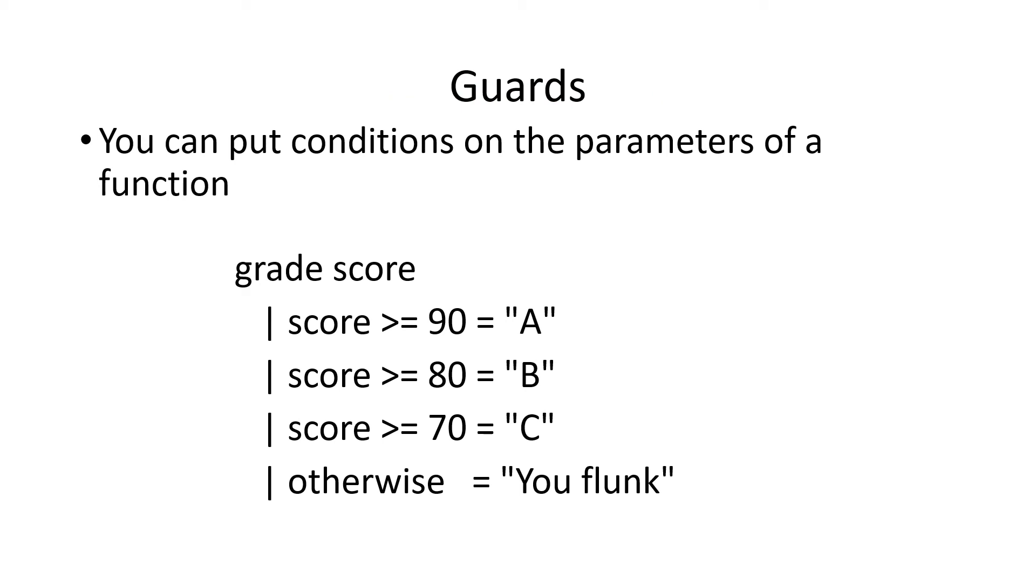Haskell also allows you to put an expression in the parameter list. Here we have a method or a function that takes one parameter score. And we have several expressions. Score is greater than or equal to 90. And then the method returns the string A or B or C. There is an otherwise, which means if none of the previous expressions were true, then it returns the otherwise statement. So in this way, you can avoid doing a lot of if and elses in the method.